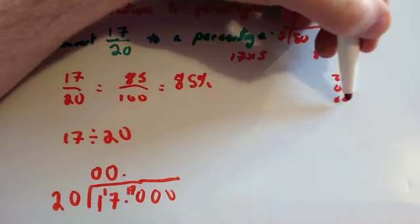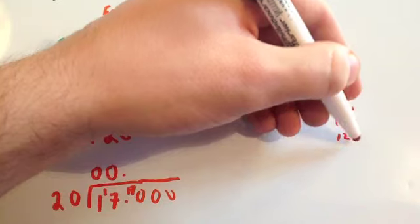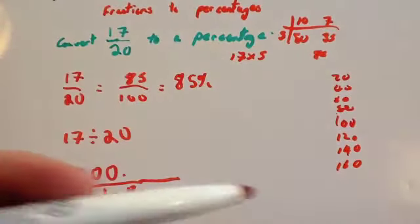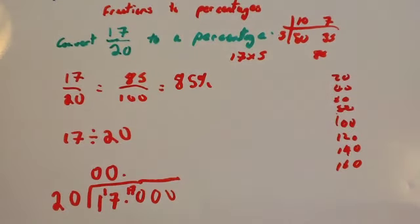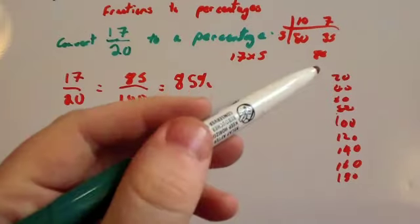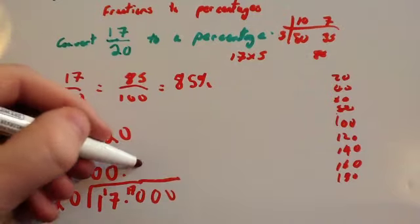So do 20 times tables: 20, 40, 60, 80, 100, 120, 140, 160, 180. So 20 into 170 goes 8 times, remainder 10.